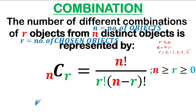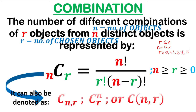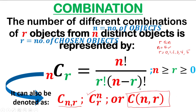This notation, nCr, can also be written in other forms — all are read as the combination of n things taken r at a time. In our book or reference, we use the standard form: the combination of n things taken r at a time. They all mean the same thing, and you will follow this formula.